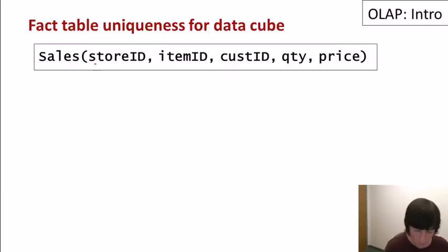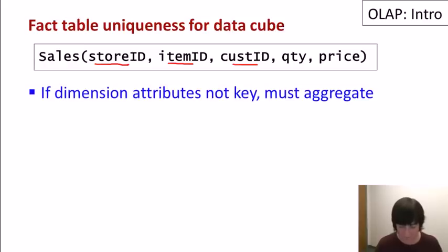So as we saw in the cube, we have one cell in the cube for each combination of store ID, item ID, and customer ID. So if those three together form a key, then it's very straightforward. If the dimension attributes together don't form a key, then we might be pre-aggregating already inside the data cube. So we might decide to already have, say, the sum of quantity times price for each combination of store, item, and customer.